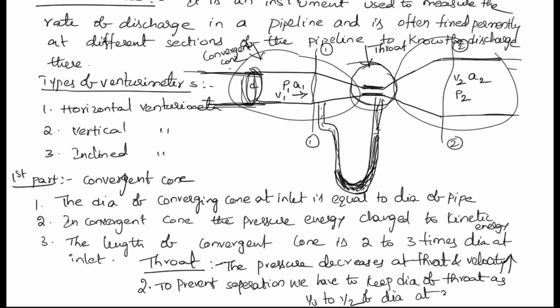The third portion of the venturi meter is called the divergent cone. The pressure at the divergent cone is p2, the area is a2, and the velocity is v2. The diameter which is present at the throat gradually increases to create the divergent cone — the diameter goes on increasing until it equals the pipe diameter.